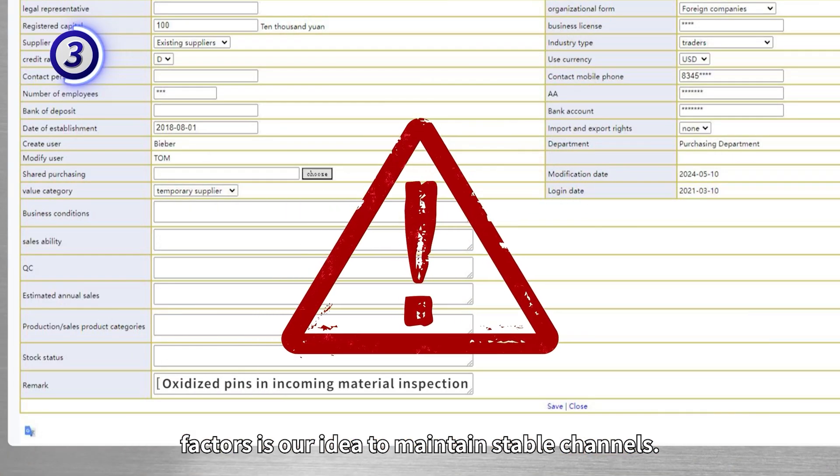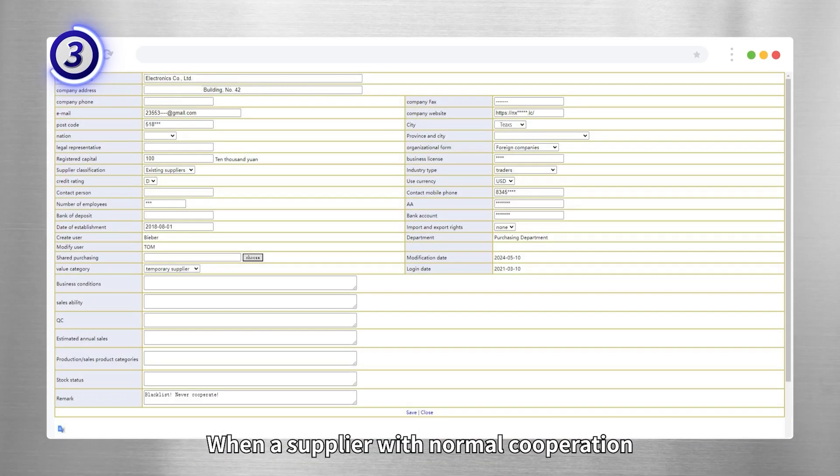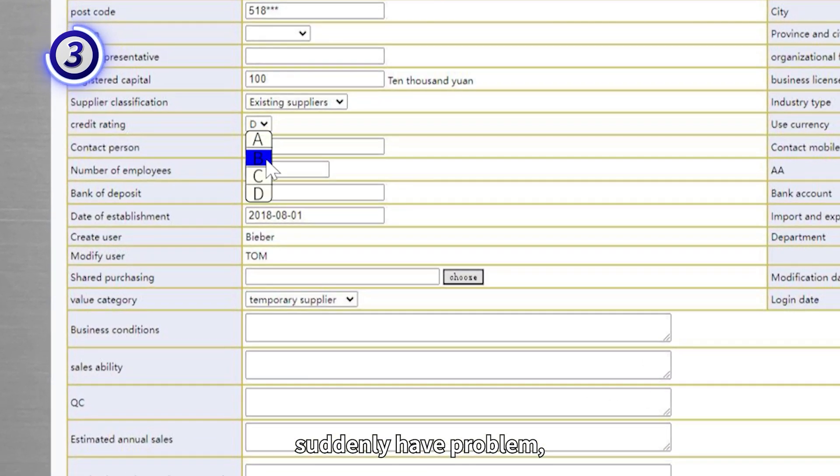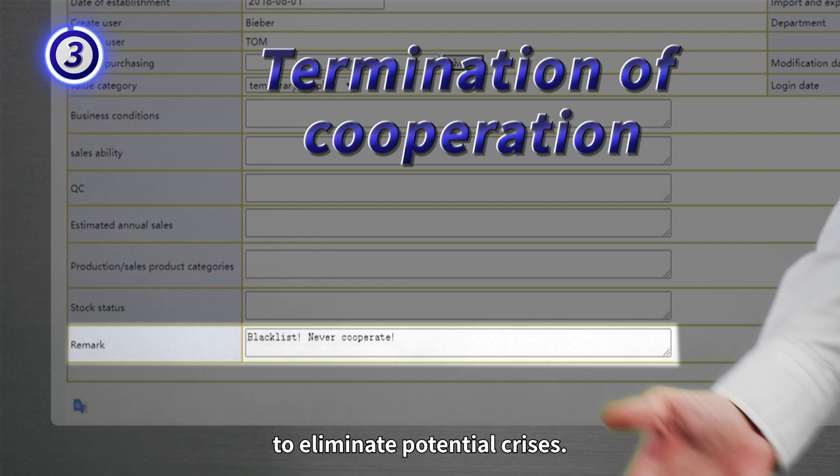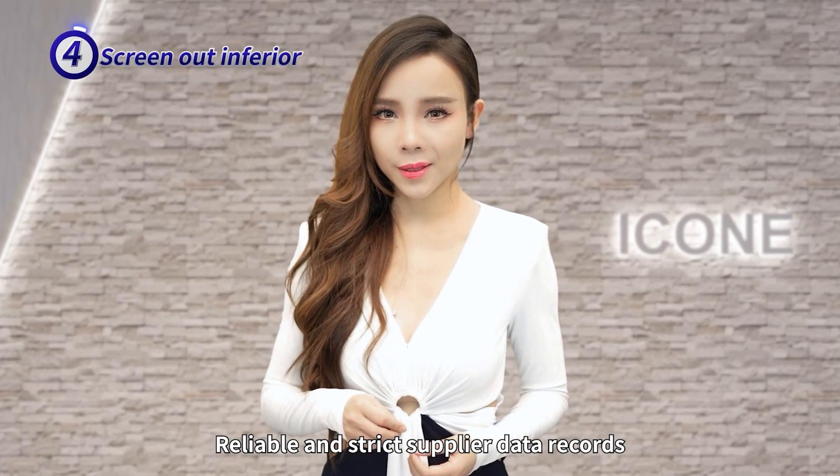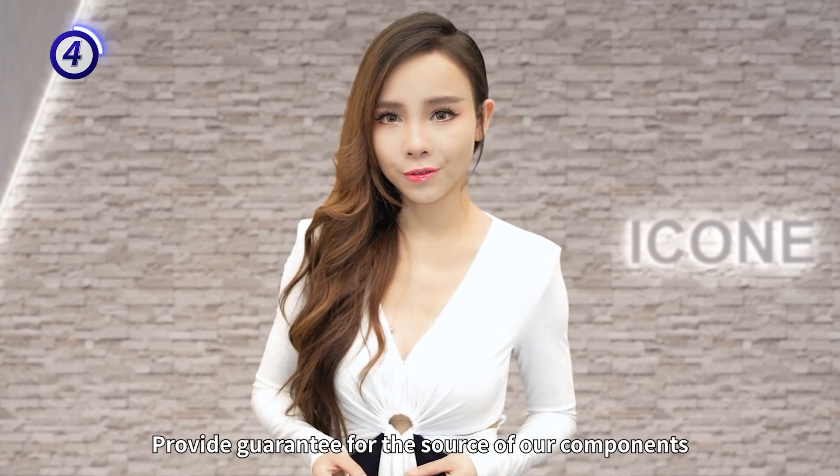If we want to ensure that the supplier channels are reliable and stable, properly discovering and eliminating unstable factors is our idea to maintain reliable channels. When suppliers with normal cooperation suddenly have problems, we will permanently add them to the system blacklist to eliminate potential risks.